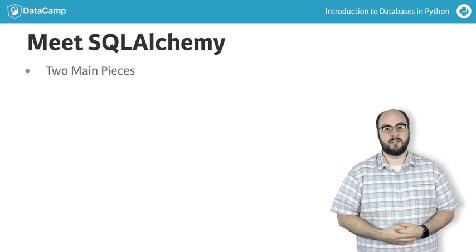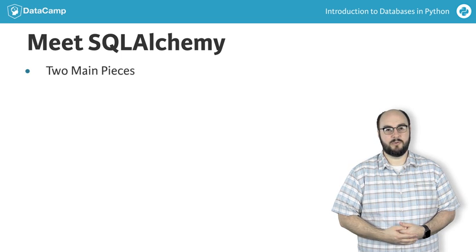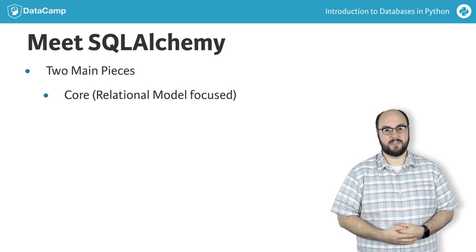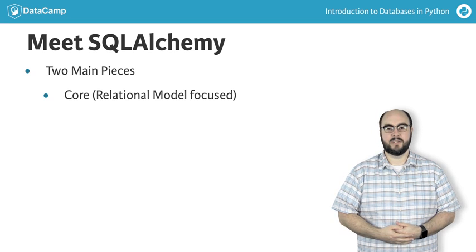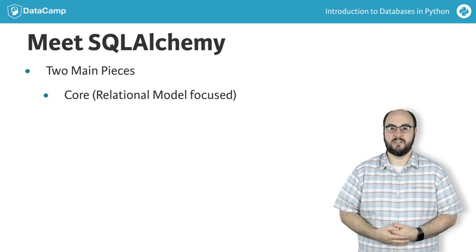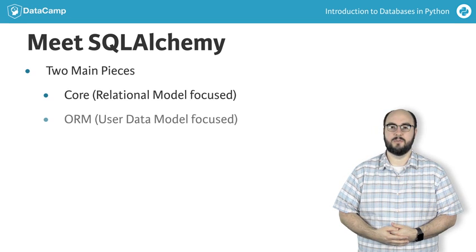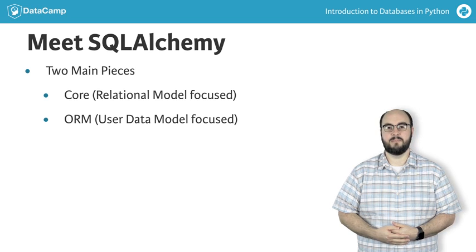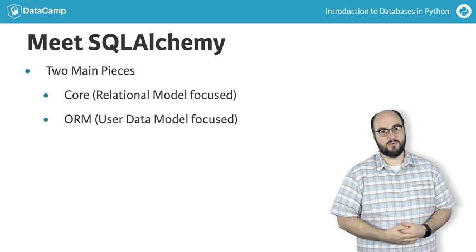SQLAlchemy has two main components. The part we will be focusing on is often referred to as the core part of SQLAlchemy, which is really focused around the relational model of the database. Additionally, there is the object relational model, or ORM part of SQLAlchemy, that is really focused around data models and classes that you as a programmer create.